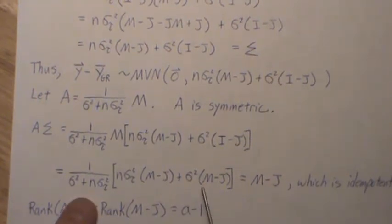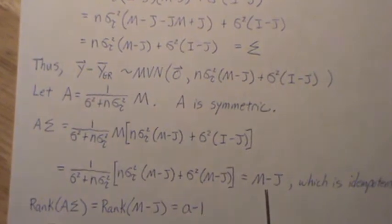So now let's factor out M - J. So we have, and then the constants left over is N sigma tau squared plus sigma. That cancels with this, leaving one. So we're left with just M - J.